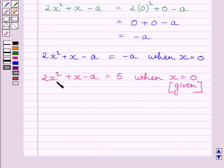So from these two statements, we get minus A is equal to 5. Now, multiplying both sides by minus 1, we get A is equal to minus 5.